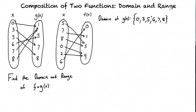Then we can take out values like 0 because g of 0 is 1 and 1 isn't in the domain of f of x. We can also take out 7 because the g of 7 is 1, and 8 because the g of 8 is also 1, and 1 is not in the domain of f of x.